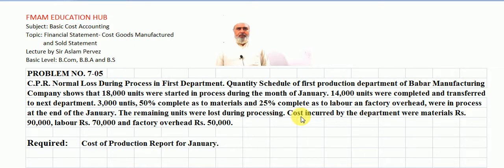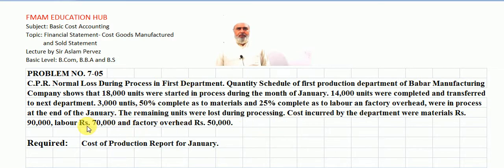The remaining units were lost during processing. Costs incurred by the department: materials rupees 90,000, labor rupees 70,000, and factory overhead rupees 50,000. Students are required to prepare the Cost of Production Report for January.